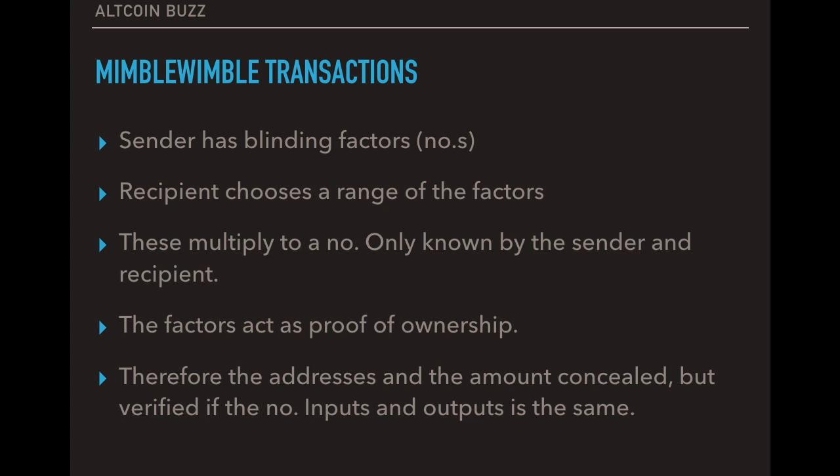And when we go into the maths, you'll understand this a little bit more. But basically, with the massive, massive numbers that this uses, the factors act as a proof of ownership because both the sender and the receiver will know that final equals big number. And if the factors don't go into it, you know that that transaction is not valid. And you could say, maybe they will go into it. But if you're looking at these huge numbers, it's very, very unlikely that coincidence will ever happen. So therefore, you know, the addresses and the amount is concealed. But it's verified if the number of inputs and outputs is the same. However, with Bitcoin, you're looking at 5 Bitcoin sent is the same as 5 Bitcoin received. With this, the amount sent is multiplied by these blinding factors. So therefore, it becomes a much larger number, a number that is unfathomable to us at the minute. So that basically means that you cannot see the amount on the transaction, which gives that privacy.